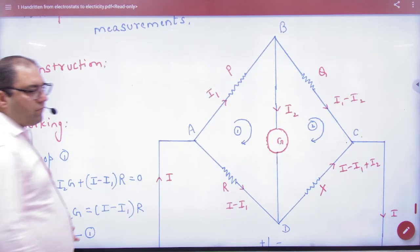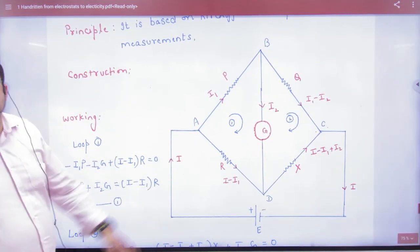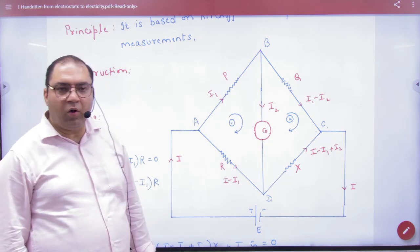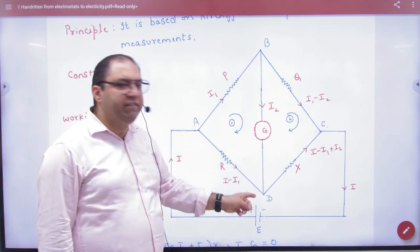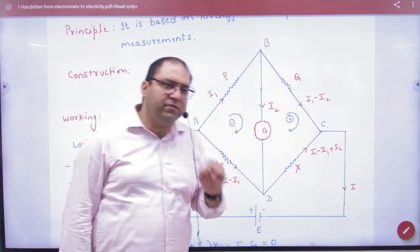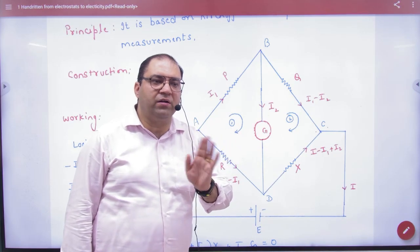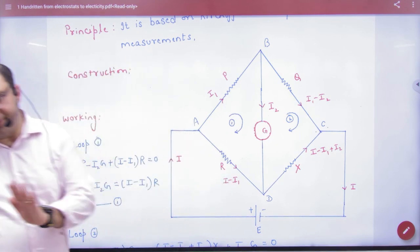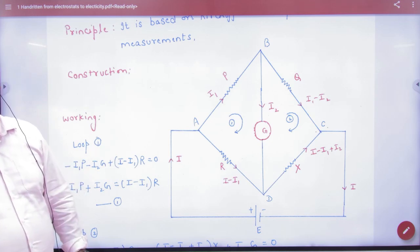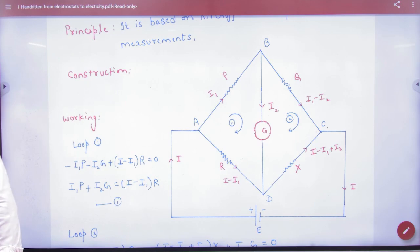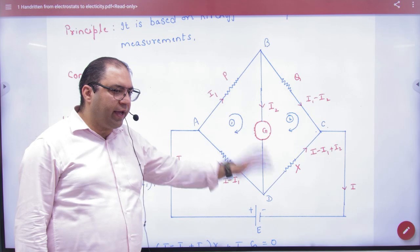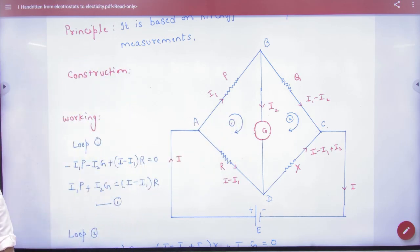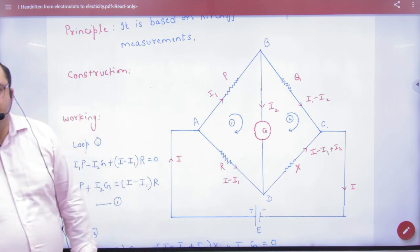What is the construction? You have to build it like this: Take one resistance P, one Q, one R, and one unknown X. And in the middle, take galvanometer G. Galvanometer is a device that detects whether current is in the wire or not - it has a needle. If the needle deflects, there is current. If not, no current. And the galvanometer has wires inside with resistance capital G. So in total, you have one P, one Q, one R, one X, and one galvanometer resistance G in between. Then you attach a battery E.